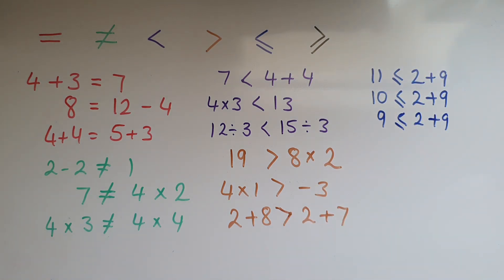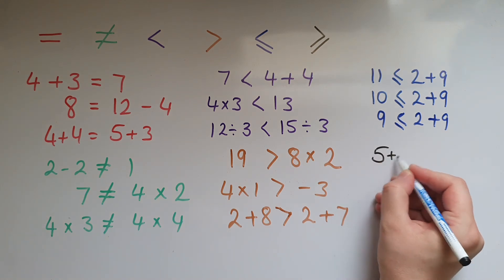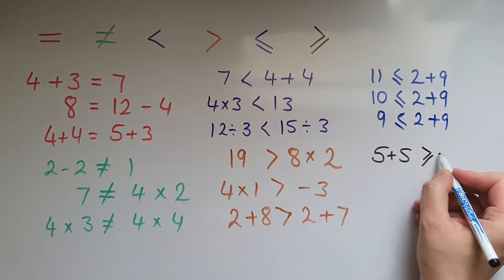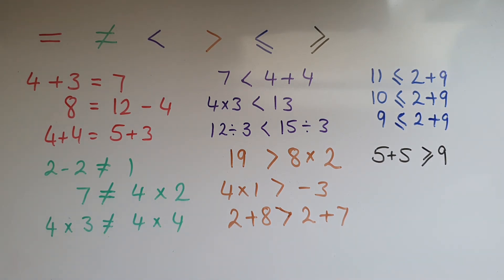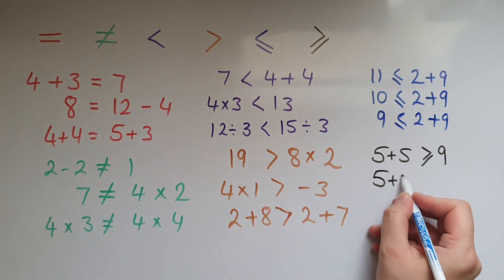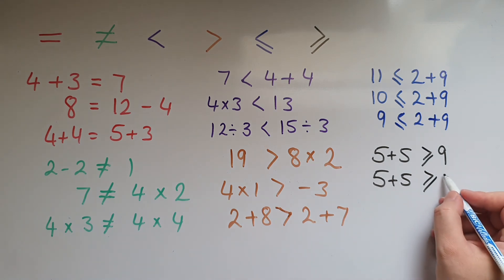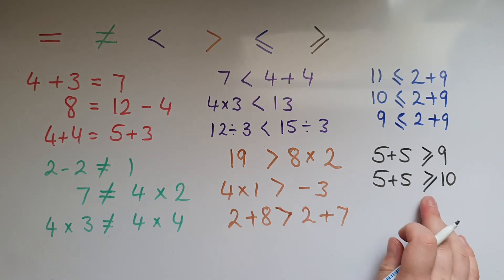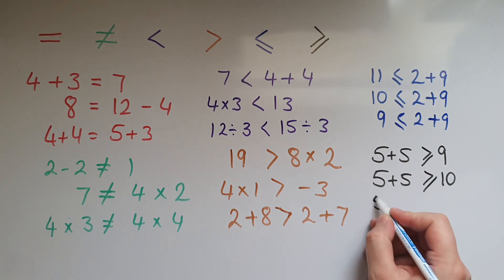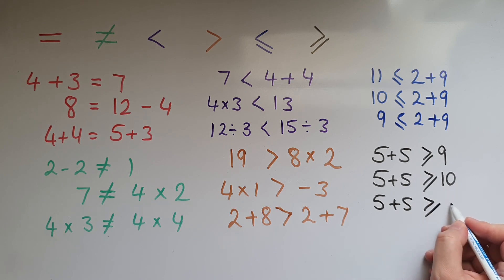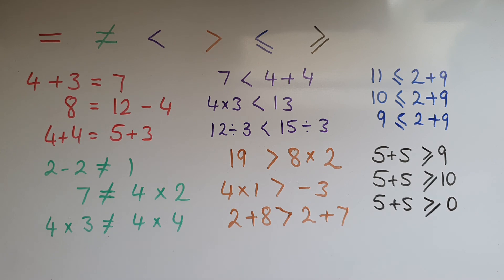Greater than or equal to: 5 add 5 is greater than or equal to 9; 5 add 5 is greater than or equal to 10 — and the equal is included here. I could also have 5 add 5 is greater than or equal to 0, because it is greater than 0.